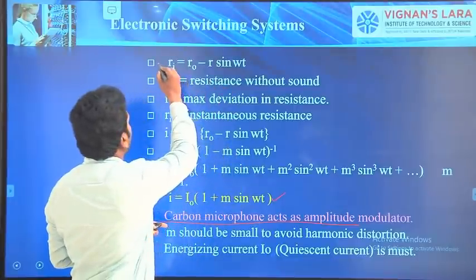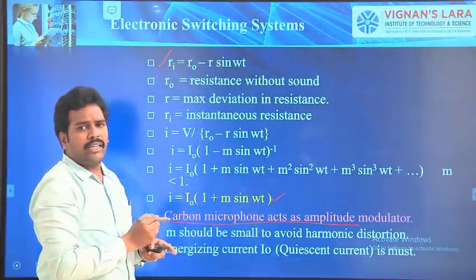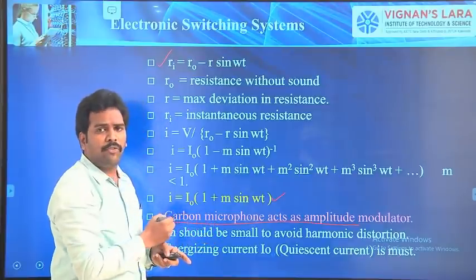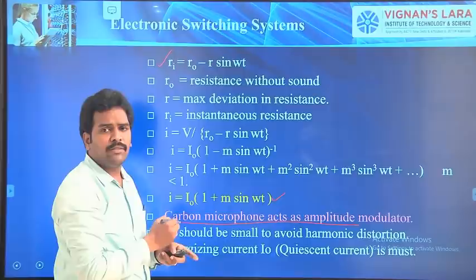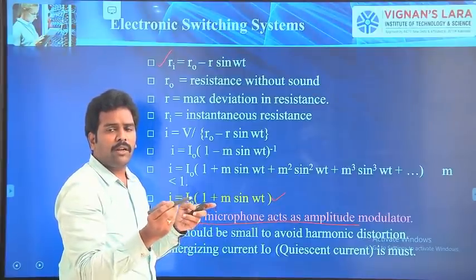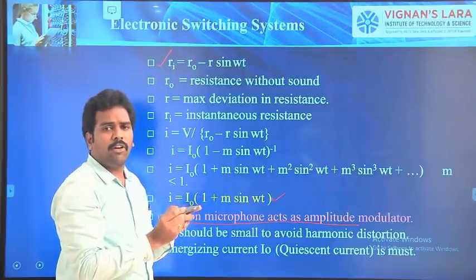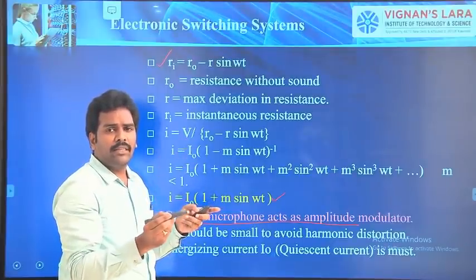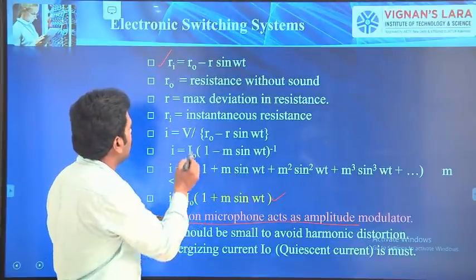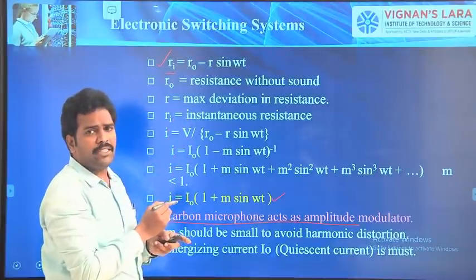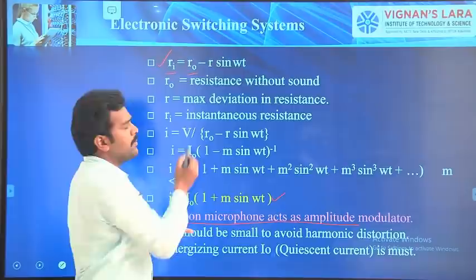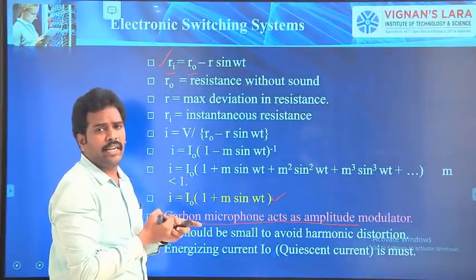So here, what is RI? RI is called instantaneous resistance. We know that this carbon microphone operates on the principle of changing resistance — that means whenever the carbon granules are closely packed, the resistance increases, and whenever the carbon granules are loosely packed, the resistance decreases. Therefore, RI is the instantaneous resistance, and R0 is the resistance before applying any voice signal.